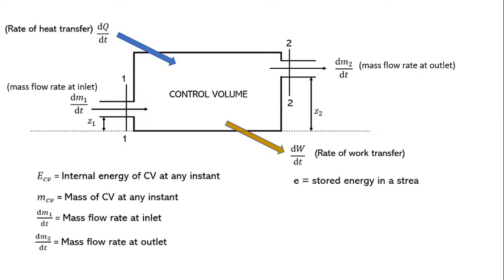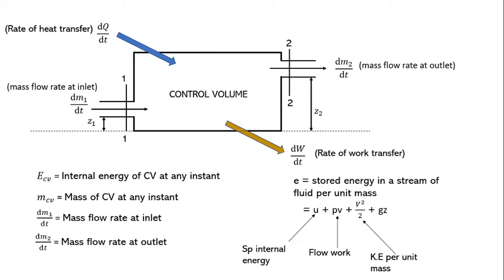Let e be the stored energy in a stream of fluid per unit mass, which equals u + pv + V²/2 + gz. Here u is the specific internal energy, pv is the flow work, V²/2 is the kinetic energy per unit mass, and gz is the potential energy per unit mass. This total is the energy associated with the stream per unit mass.